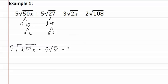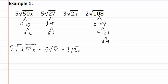The next one is already simplified, so we just write it down. One hundred eight is two and fifty-four, two and twenty-seven, three and nine, and three and three. This gives us two squared and three cubed.